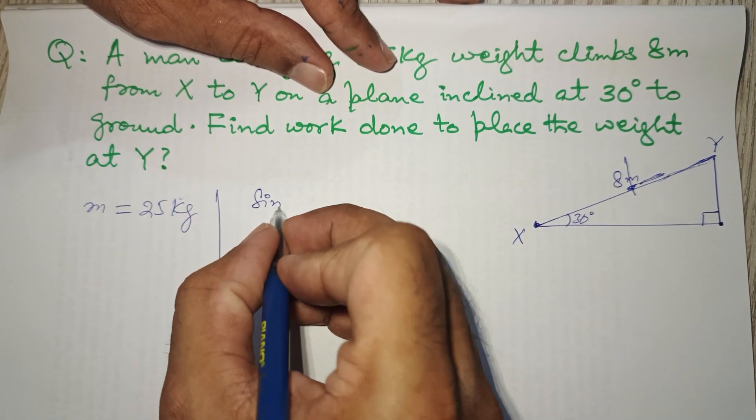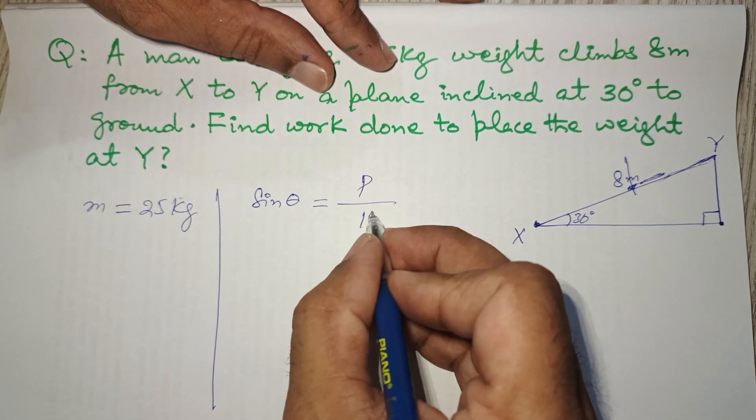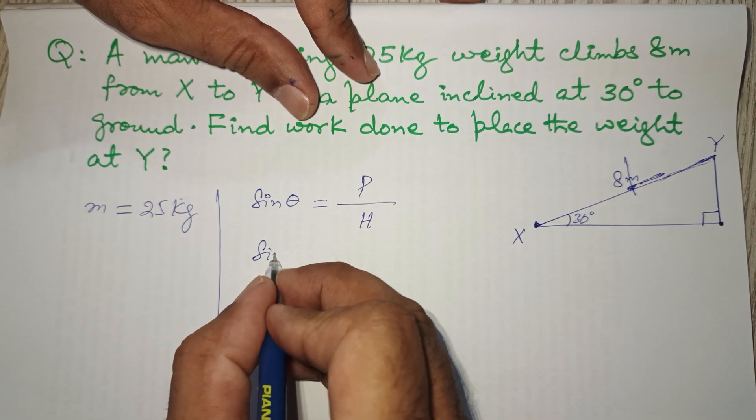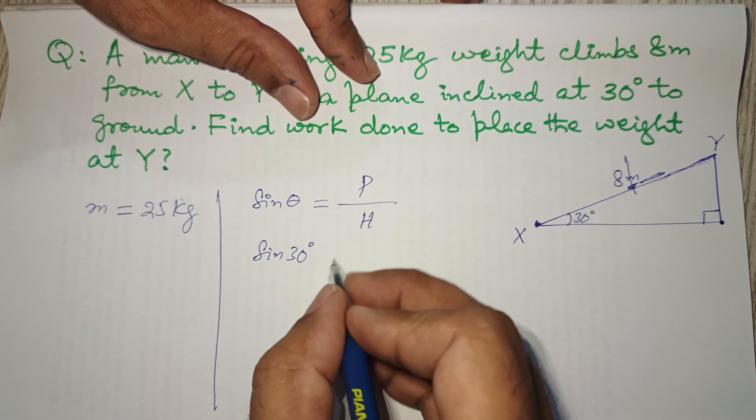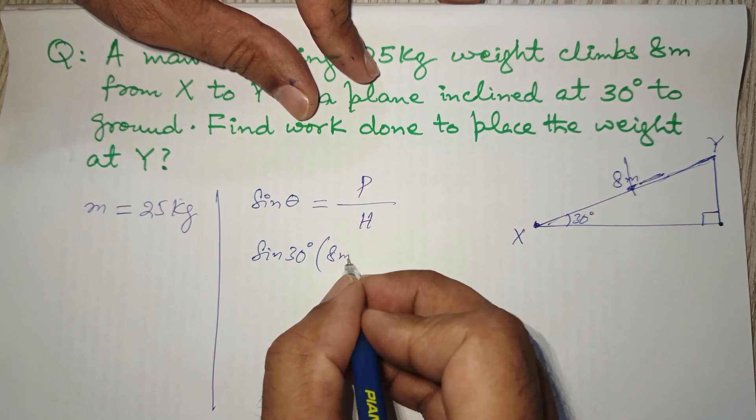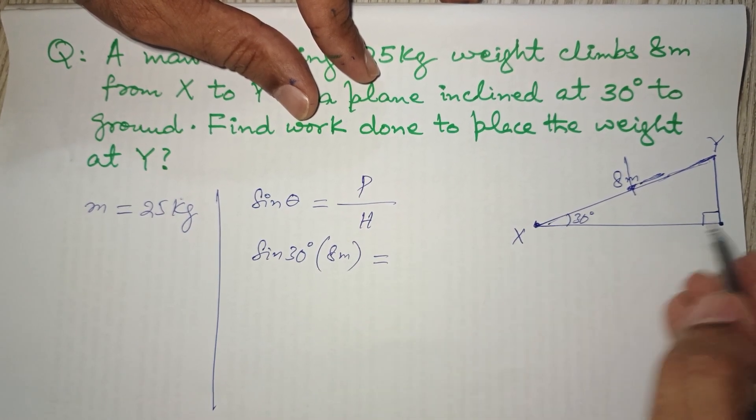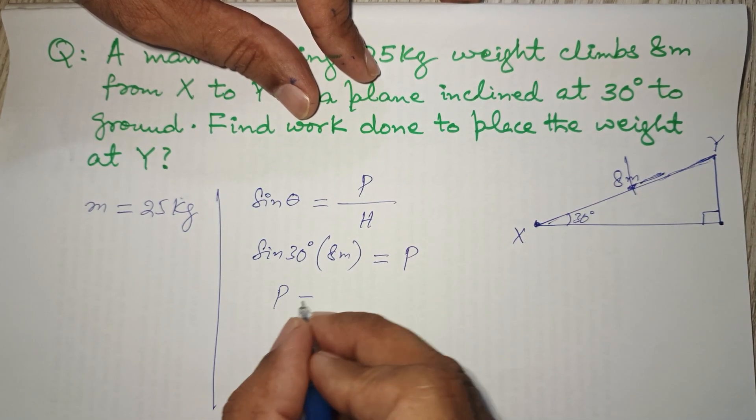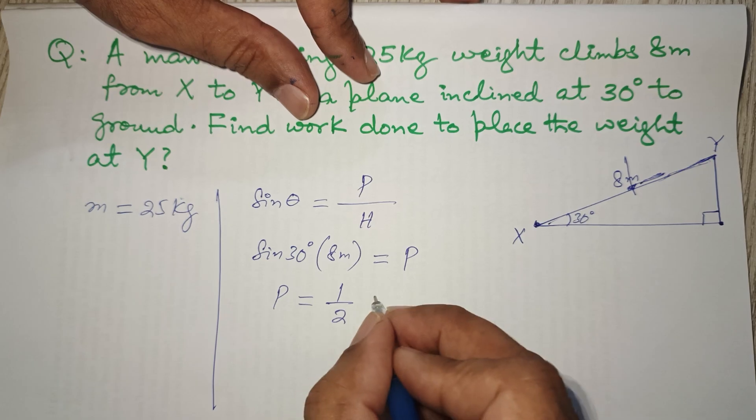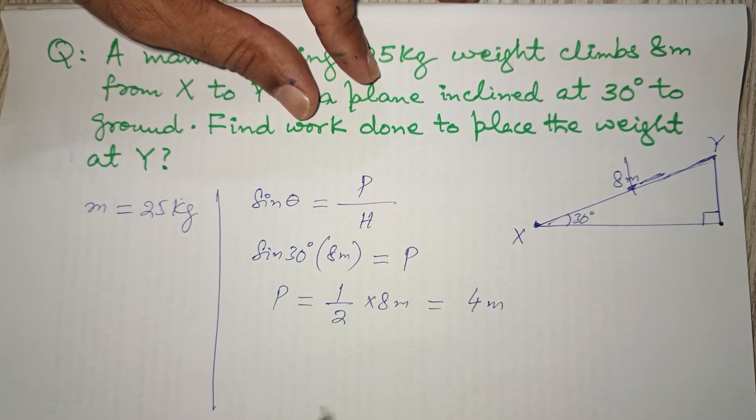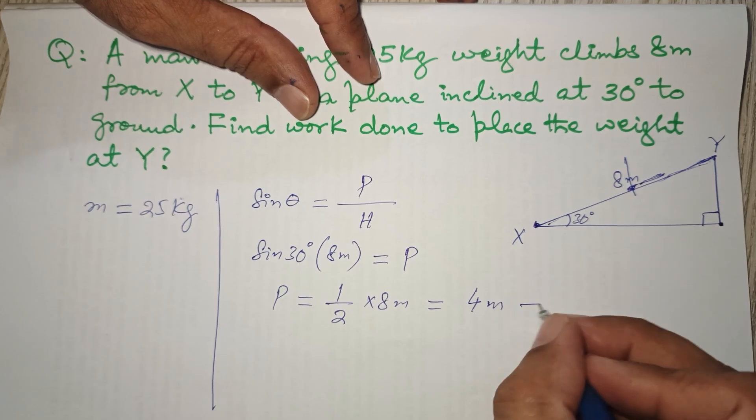We have to find out the perpendicular one because horizontal has no role in it. For that we have to find out this line, this right angle triangle. We know that sine theta equals perpendicular over hypotenuse. So in this case, sine 30 degrees, hypotenuse is 8 meters, equals p. And p is sine 30 degree, which is 1 upon 2 into 8 meters, equals 4 meters. This is the height.